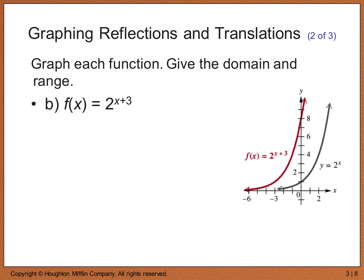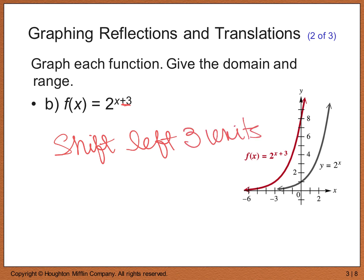When we change things inside the exponent, it shifts the graph — similar to what we saw with linear and quadratic functions. For y equals 2 to the (x plus 3), adding 3 inside the function shifts the graph left 3 units. The domain is still all real numbers and the range is still all real numbers greater than 0.